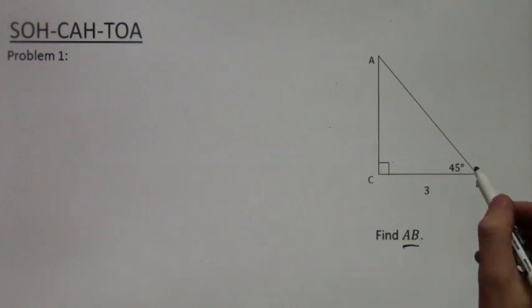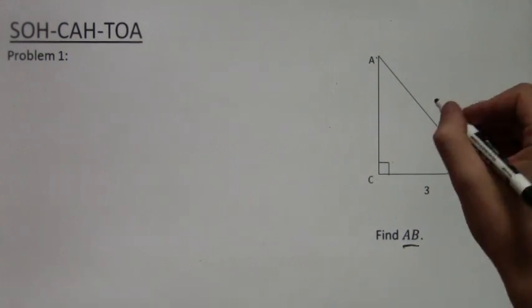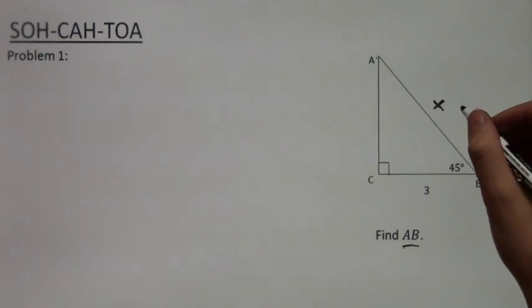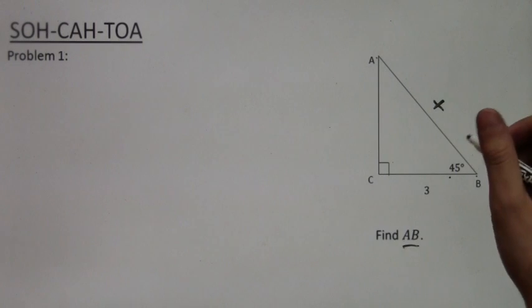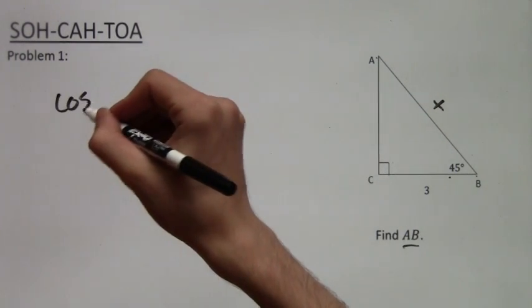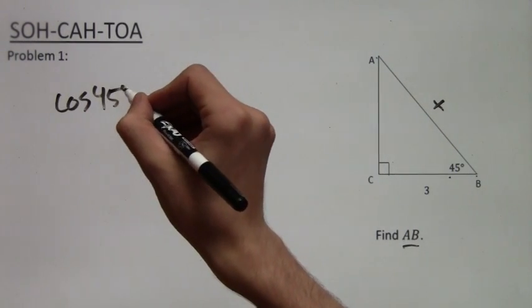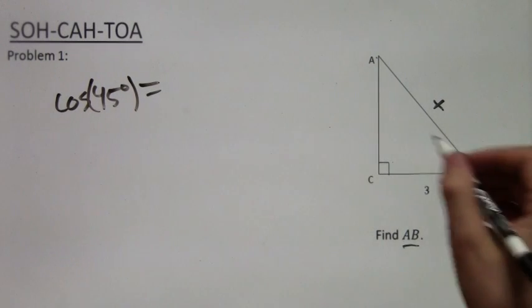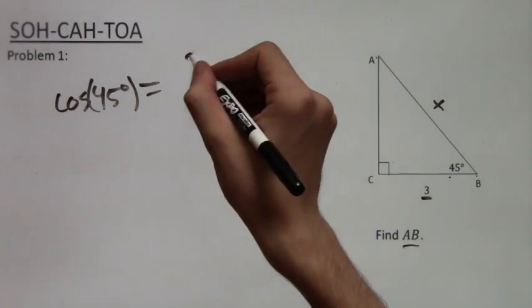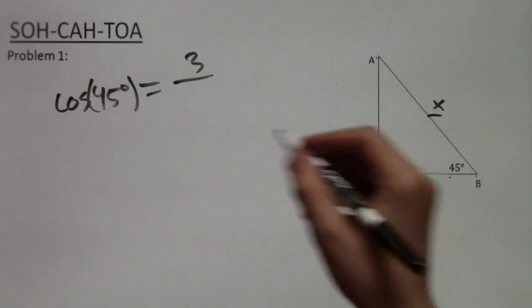So here we want to find AB. So I'm going to mark it, and it's X, and it's the hypotenuse of course. And we have angle 45 degrees. So we know that cosine of 45 degrees equals, and then it's adjacent, which is 3, over hypotenuse, and the hypotenuse is X.